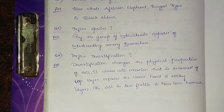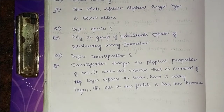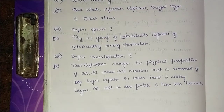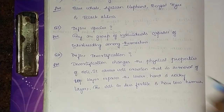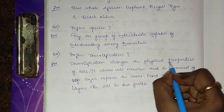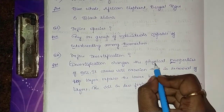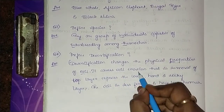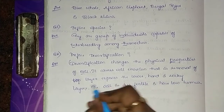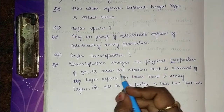The fourth question is: define desertification. Desertification changes the physical properties of soil. It causes soil erosion, that is removal of the top layer, which exposes the lower hard and rocky layers.